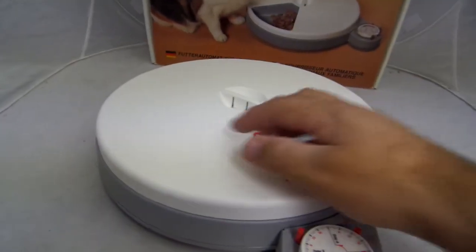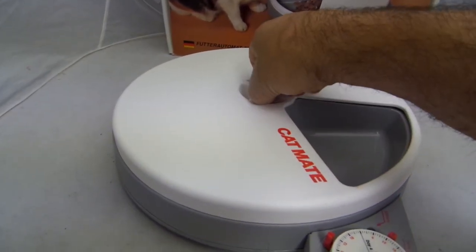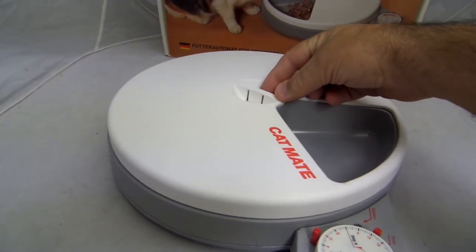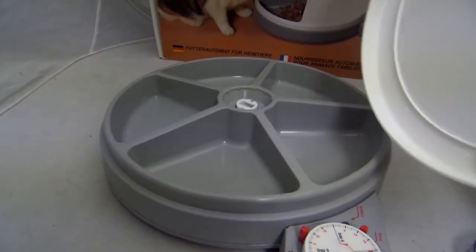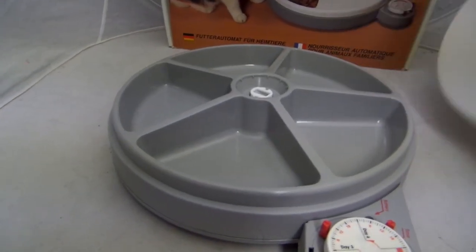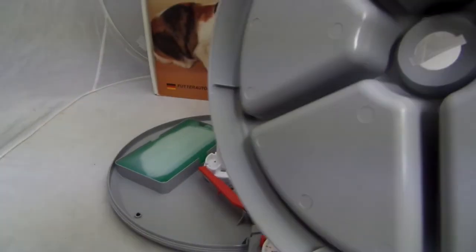If you want to clean, simply pull up those two little tabs, push in on the tabs, pull off the lid, so you can take the tray out and wash it.